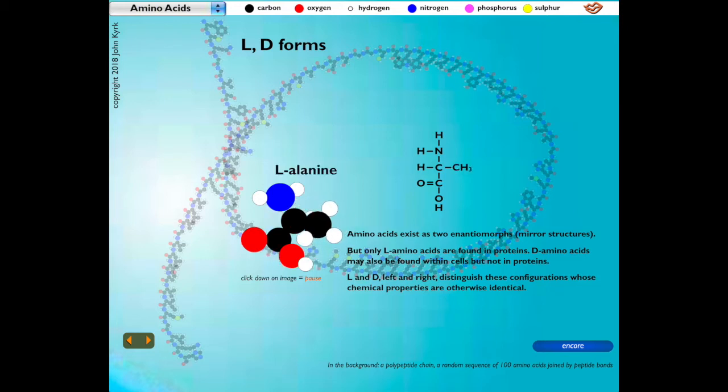The L and D, left and right, distinguish these configurations, whose chemical properties are otherwise identical. Here, the methane group attached to the alpha carbon changes its orientation to form L-alanine or D-alanine molecules. The D form does not occur in proteins.